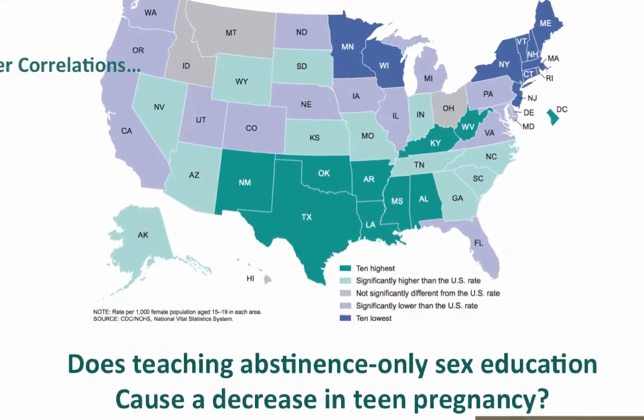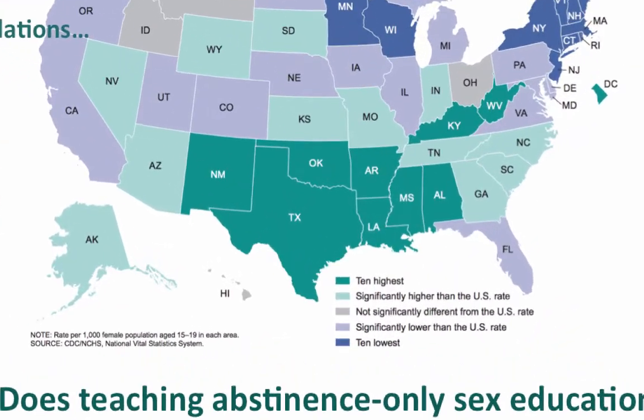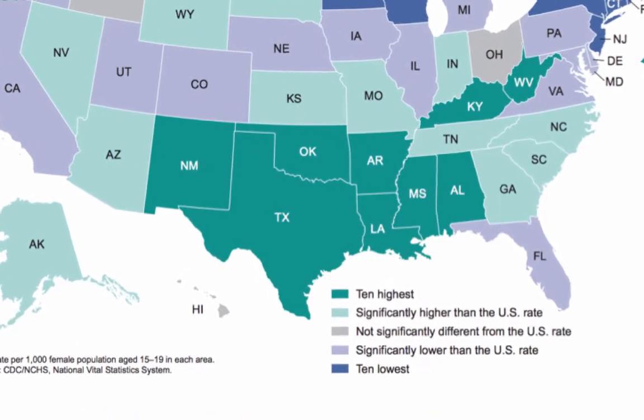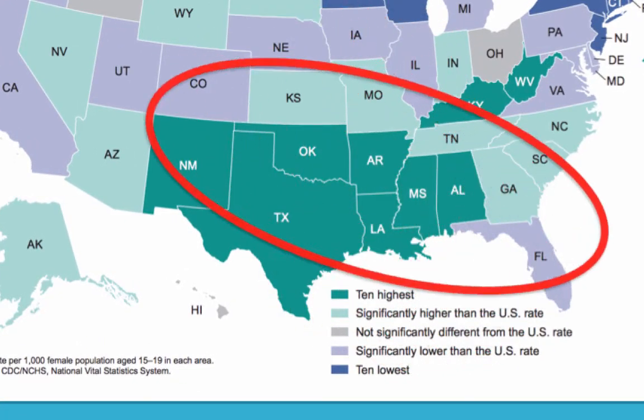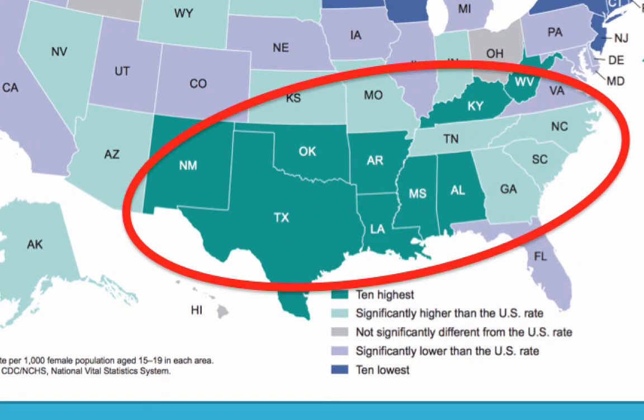According to Ventura, Hamilton, and Matthews (2014), the highest rates of teen pregnancy are in states with laws requiring schools to teach abstinence-only. Yes, this is a correlational observation. But the association between promoting abstinence sex education in schools and increased teen pregnancy does not support the theory that abstinence education works.